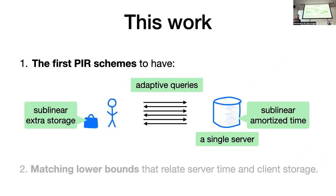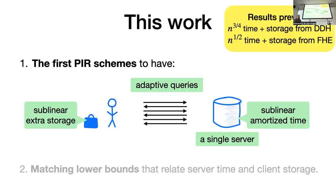What we do in this work is we give the first PIR schemes that jointly achieve a number of properties we care about in practice. Specifically, our client is going to communicate with only a single database server. Our client is going to be able to make its queries adaptively. There's going to be sublinear extra storage — some sublinear extra storage on the client and no extra storage on the server. And most importantly, our server is going to run in sublinear amortized time. To give a quick preview: we give a scheme from Decision Diffie-Hellman in which our server runs in time N^(3/4) and our client has storage N^(3/4). And from the stronger assumption that fully homomorphic encryption exists, we can build a scheme in which our server runs in time √N and our client has storage √N.